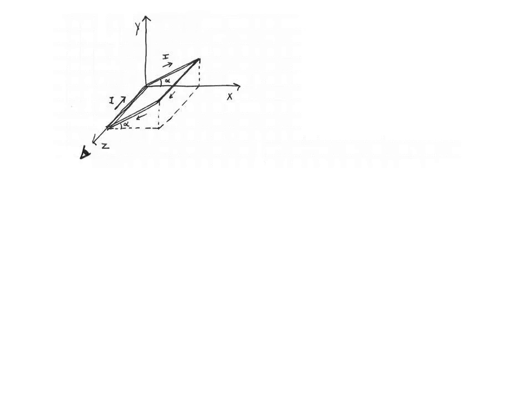I'll indicate the observer along the z-axis with a little eye. The eye sees the current going into the page along the z-axis and on the other side it sees the current coming out of the page. Current into the page is indicated with a cross, and current out of the page is indicated with a dot. I've also redrawn the angle of 26.5 degrees.